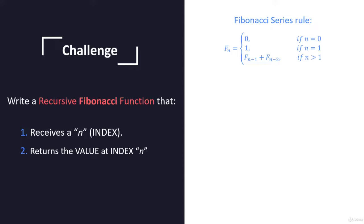The first element when n equals zero, when the index is zero, the value is going to be zero. The next element, when n equals one, when the index equals one, the value will be one, and we can see it right here.